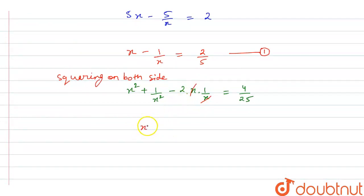So, x square plus 1 upon x square will be equal to 2 plus 4 upon 25. This will be equal to 54 over 25, which is 2 and 4 over 25 in mixed fraction. 4 over 25 will be the right answer.